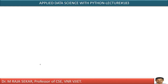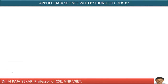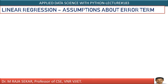My dear friends, welcome to Rajshaker classes on Applied Data Science with Python. This is lecture number 183. In my previous lecture, that is lecture number 182, we discussed about R-square value.